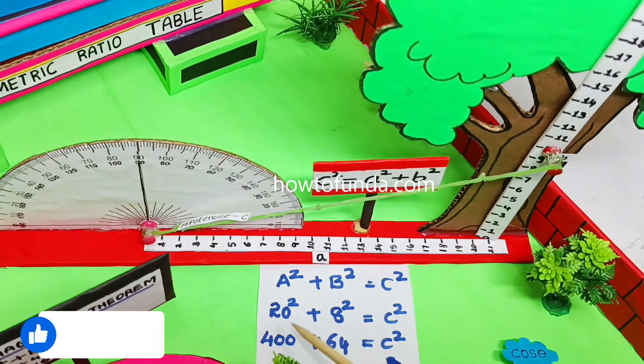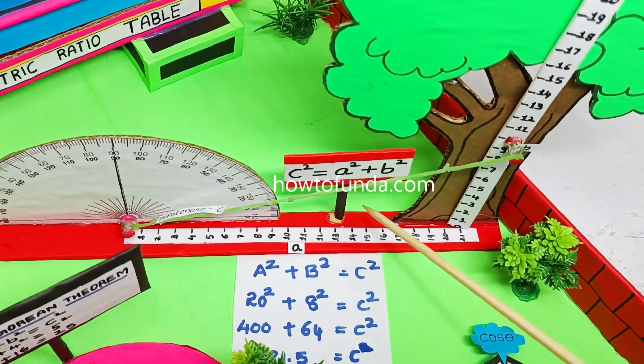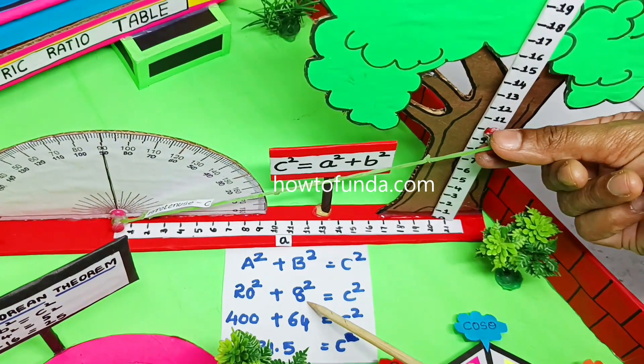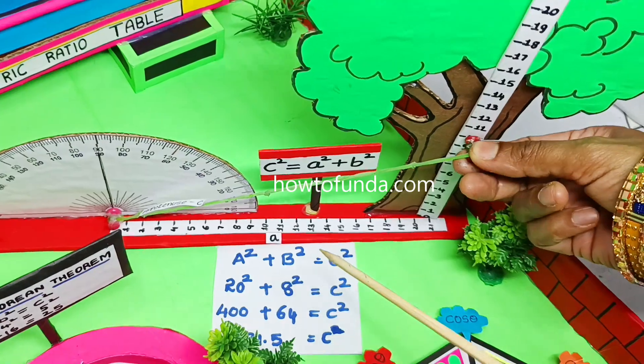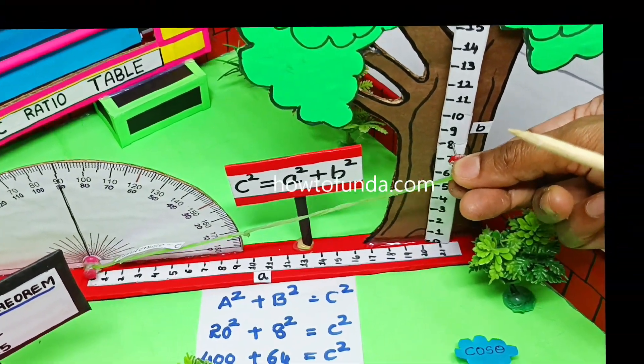Here we are given the value for a is 20 centimeter, which is 20 centimeter. Now height we are representing here is 8 centimeter. If you can see, we are going to move that hypotenuse to 8 centimeters.